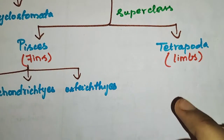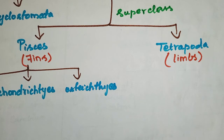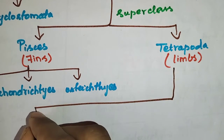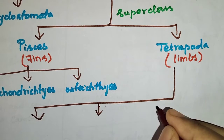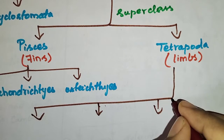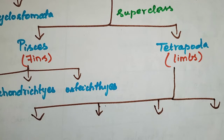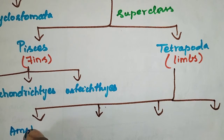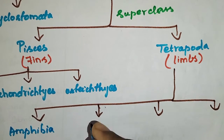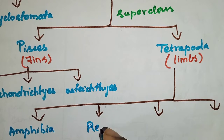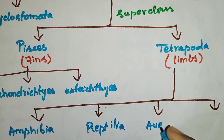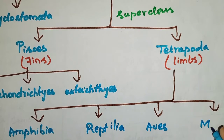The superclass Tetrapoda has four classes: Amphibia, Reptilia, Aves, and Mammalia. We will see their characteristics in the next video.